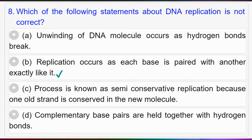Question number eight: Which of the following statements about DNA replication is not correct? Option A: unwinding of DNA molecules occurs as hydrogen bonds break; option B: replication occurs as each base is paired with another exactly like it; option C: the process is known as semi-conservative replication because one old strand is conserved in the new molecule; option D: complementary base pairs are held together with hydrogen bonds. Answer to question number eight is option B: replication occurs as each base is paired with another exactly like it.